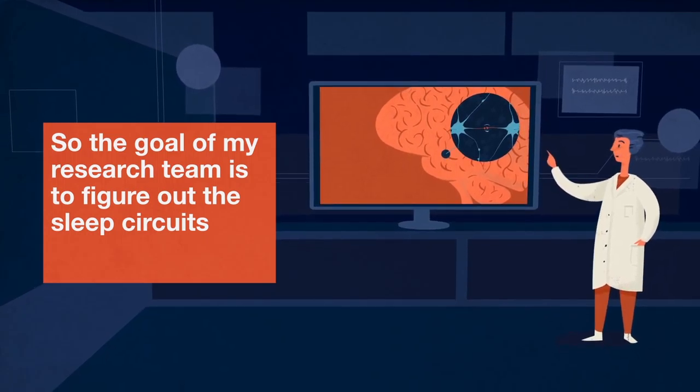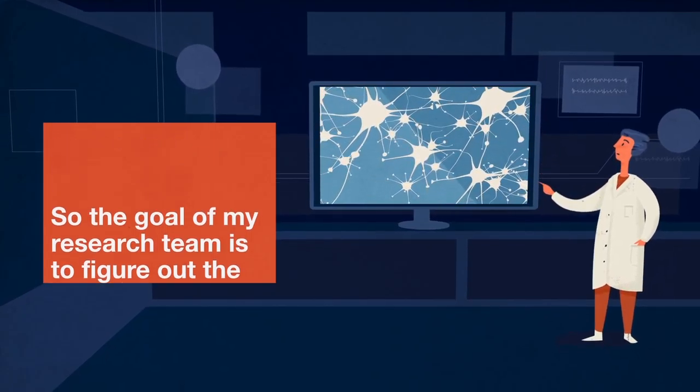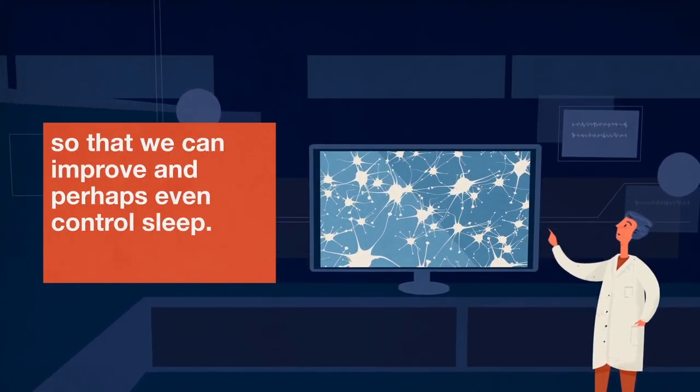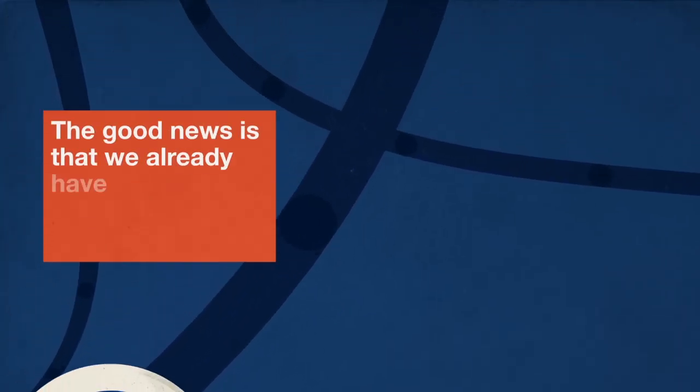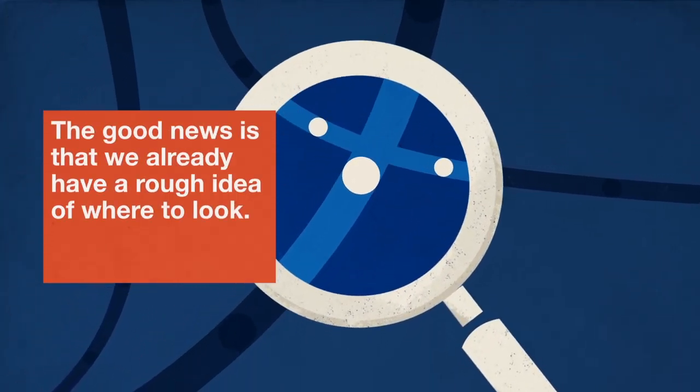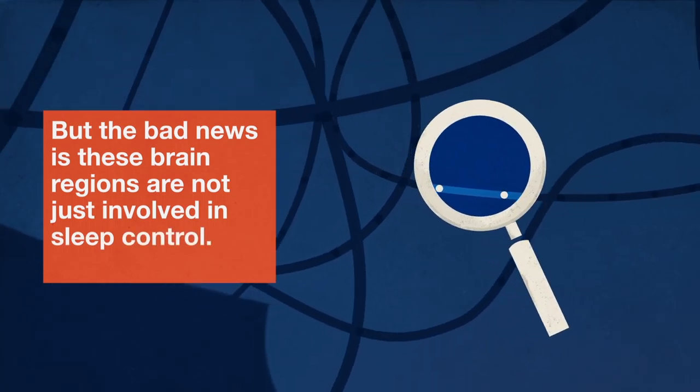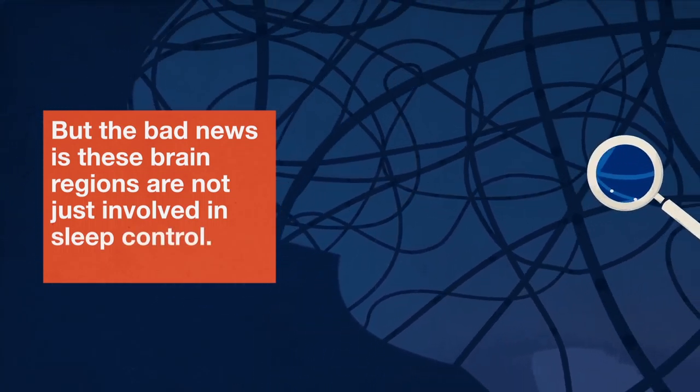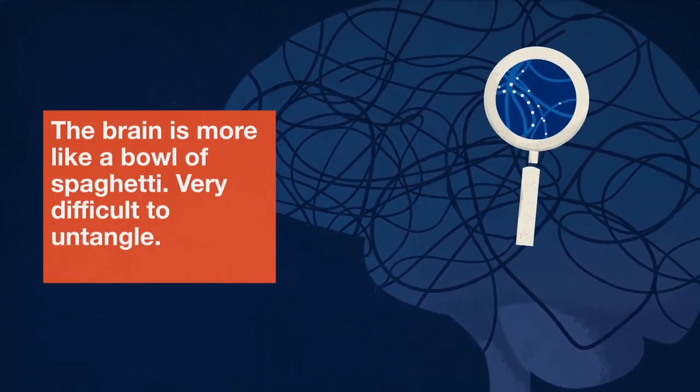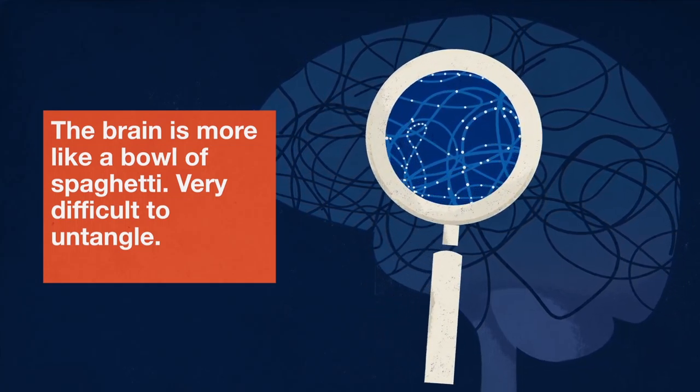So the goal of my research team is to figure out the sleep circuits so that we can improve and perhaps even control sleep. The good news is that we already have a rough idea of where to look, but the bad news is that these brain regions are not just involved in sleep control. The brain is more like a bowl of spaghetti, very difficult to entangle.